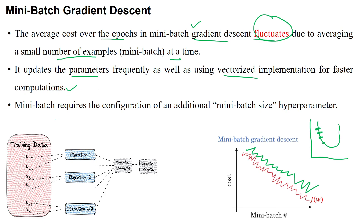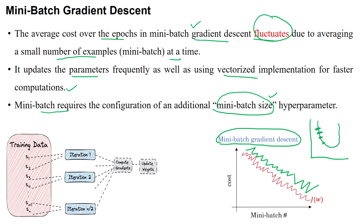Mini-batch gradient descent updates parameters frequently and uses vectorized implementation for faster computations, unlike previous methods. However, it requires configuring an additional hyperparameter — the mini-batch size — and it takes some time and memory space to store values. Overall, mini-batch gradient descent causes fluctuation in the learning curve due to the frequent parameter updates during training. Thanks for watching.